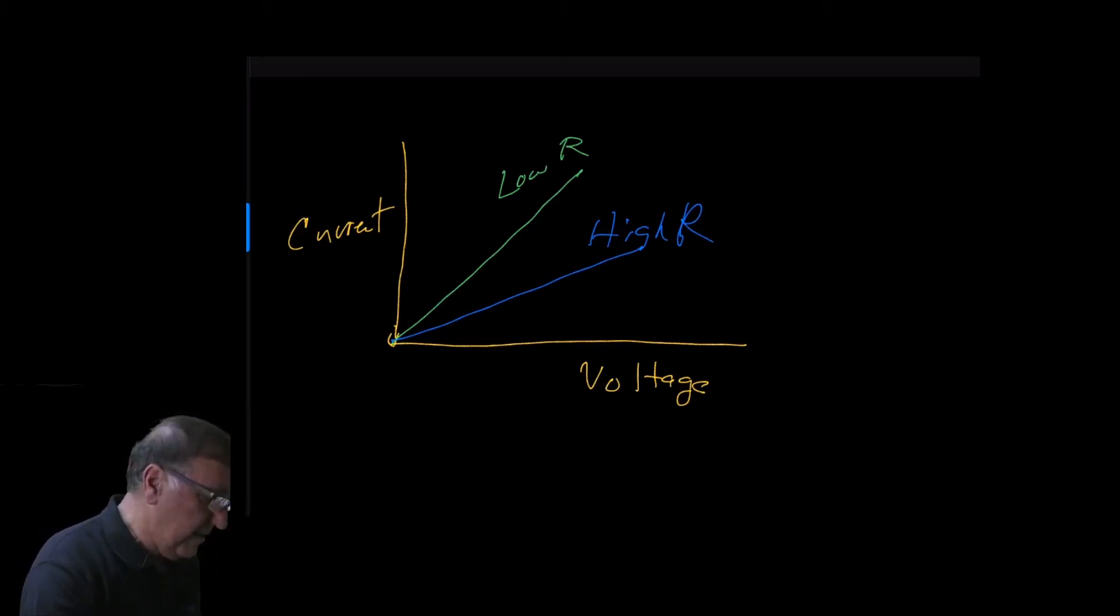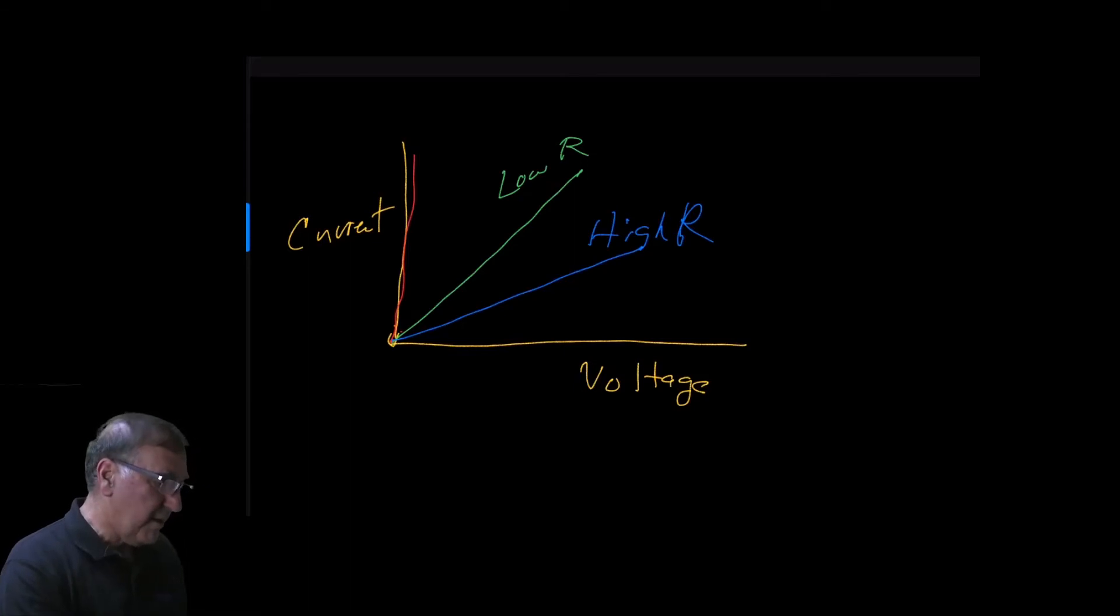And if we had a short circuit, it would look like this on the graph. So a short circuit, the current can be infinitely high, but there's no voltage.